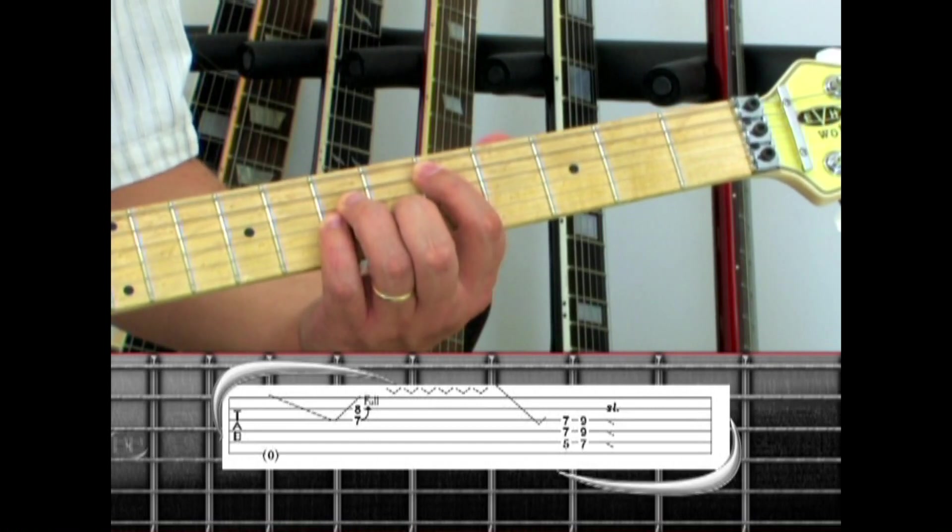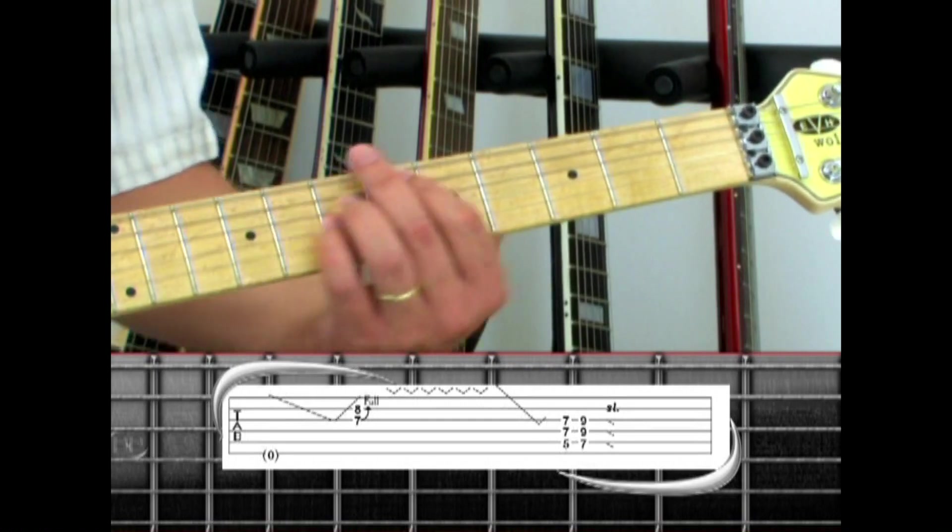Up two frets to E5. Then slide down the neck.